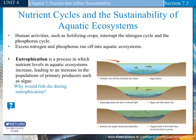Nutrient Cycle and Sustainability of Aquatic Ecosystems. Human activity, such as fertilizing crops, interrupts the nitrogen cycle and the phosphorus cycle — that's how nitrogen and phosphorus move through our four spheres.